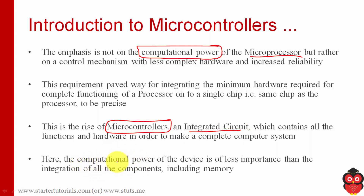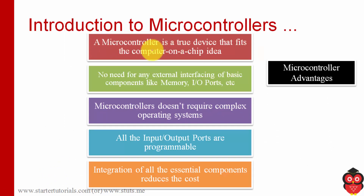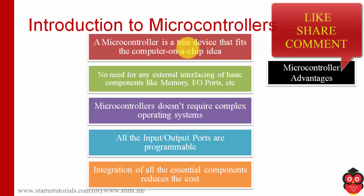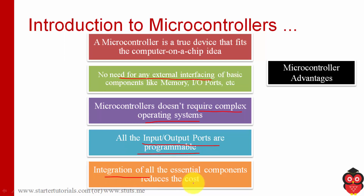In a microprocessor, computational power is more important, whereas in a microcontroller, computational power is less important — instead, the integration of components is what matters. The advantages of a microcontroller include: it is a single chip containing all the hardware; there is no need for external interfacing since everything is already on the chip; it does not require a complex operating system like Windows, Ubuntu, or Linux; all I/O ports are programmable; and integration of all these components reduces the overall cost.